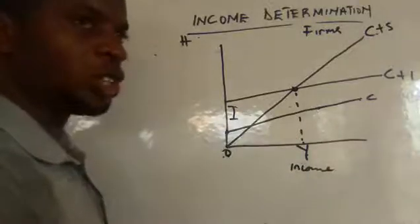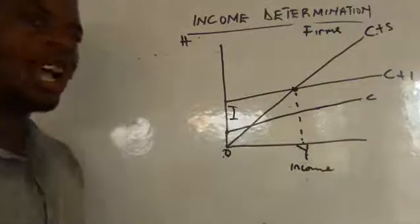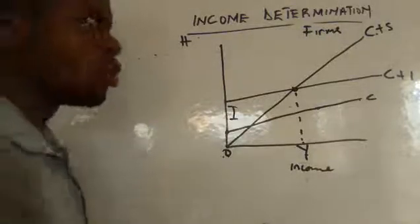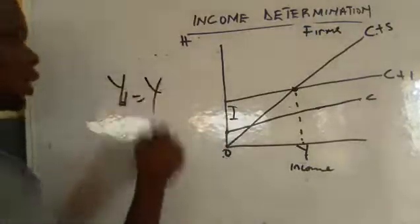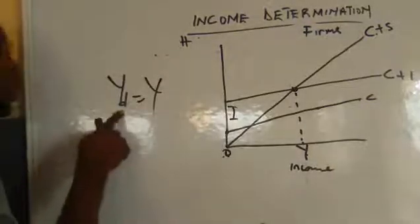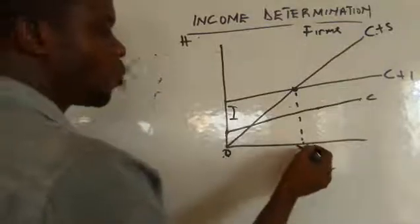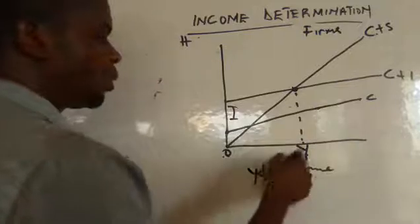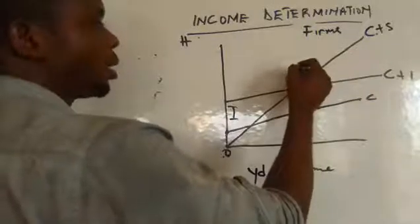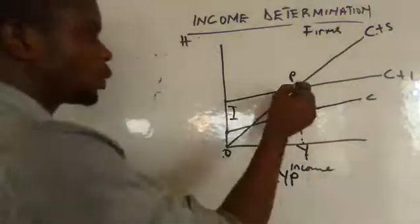Our disposable income here equals national income (YD = Y) because there is no tax in this economy — the whole income equals the income we can dispose. At this stage, disposable income runs from Y to point P. We label this range accordingly on the graph.